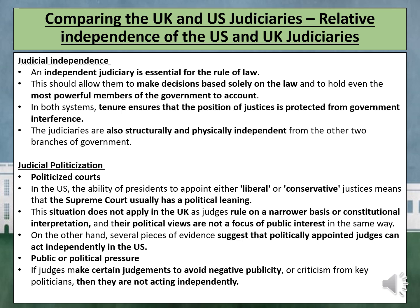Politicisation describes a situation in which judges are drawn into politics, which compromises their neutrality as guardians of the law. This can happen when judges make controversial judgements criticised by politicians or the media, or if they are motivated by their own political beliefs rather than a strict reading of the law. In the US, the ability of presidents to appoint either a liberal or conservative justice means the Supreme Court usually has a political leaning. A Republican president is likely to be challenged on fewer occasions by a conservative majority court. This situation does not apply to the UK, as judges rule on a narrower basis of constitutional interpretation and their political views are not a focus of public interest in the same way.